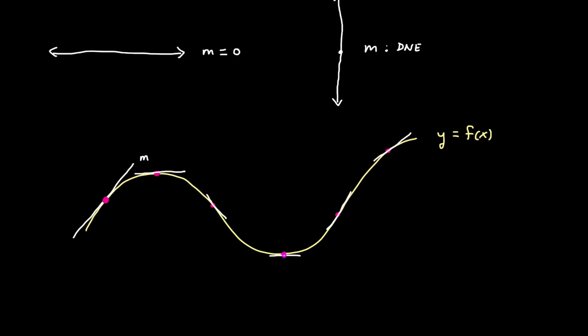At this point down here, the tangent line is horizontal, so the slope of the tangent is zero. And then we would also say the slope of the function at this point is also zero.